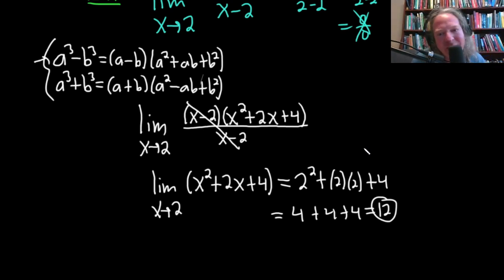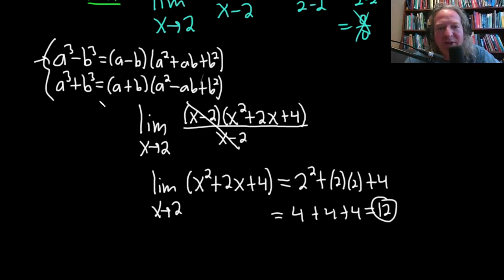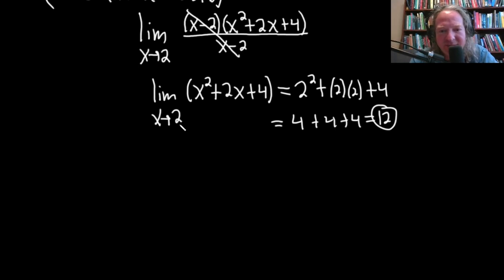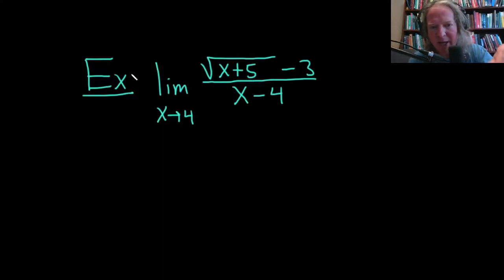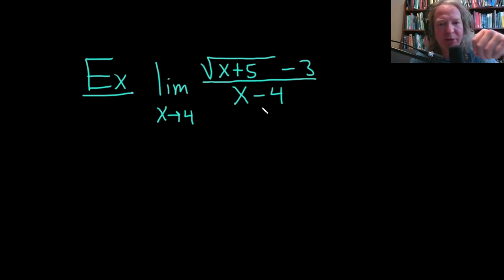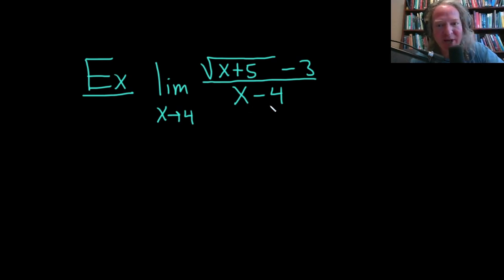That's another example of factoring. Now let's work out this example: the limit as x approaches 4 of (√(x+5) - 3) over (x - 4). If we plug in 4 on the bottom, we get 4 - 4 = 0, so we need to do something else. That something else is called rationalizing.